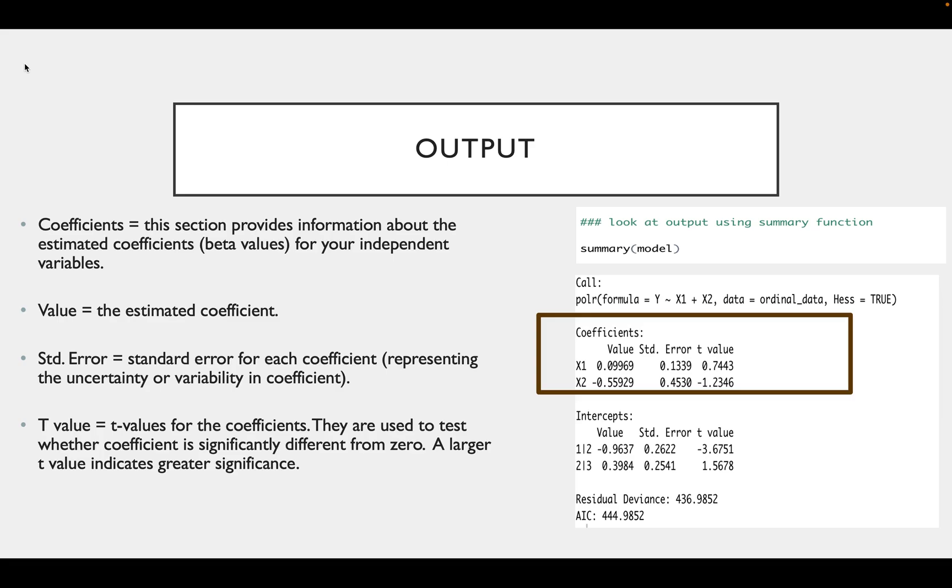You can then see the output of your model using the summary function. It will show you a box like this, where we're going to focus on the first coefficients box. This tells you the information about the estimated coefficients or beta values for each of your independent variables. The value is the coefficient, then we have the standard error and the t-value. The t-values can be used to test whether the coefficient is significantly different from zero.